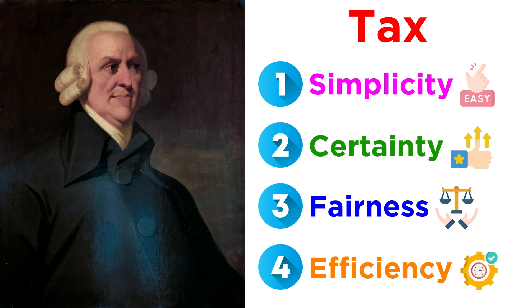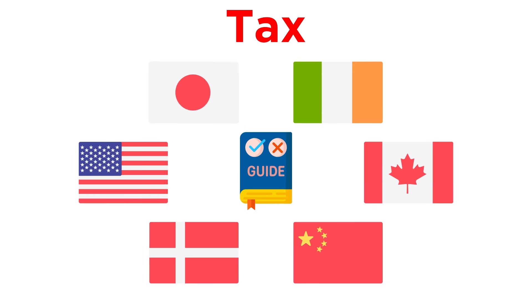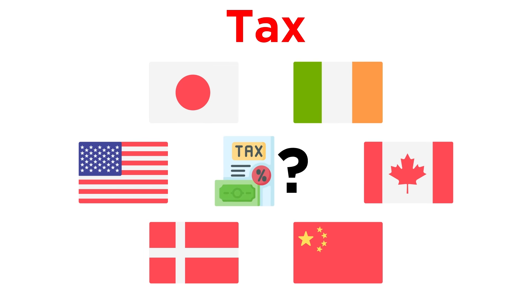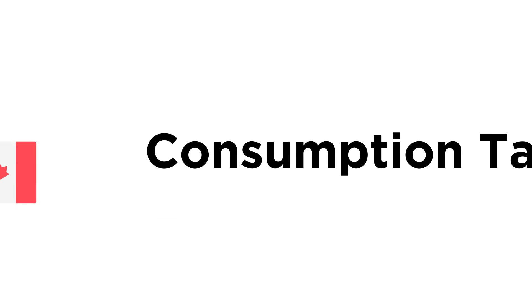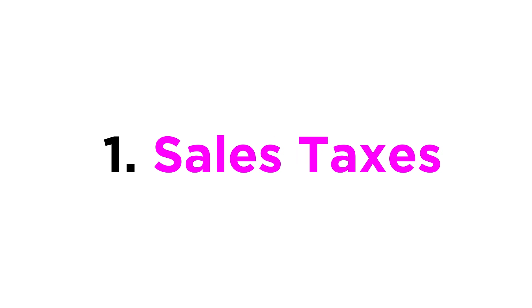While Smith offers a welcome guide, governments around the world still tax in different ways. So what should be taxed? In this tutorial, we're going to look at all the major types of taxes that governments typically collect, starting with consumption taxes, or taxes on the purchase of stuff. Number one: sales taxes.